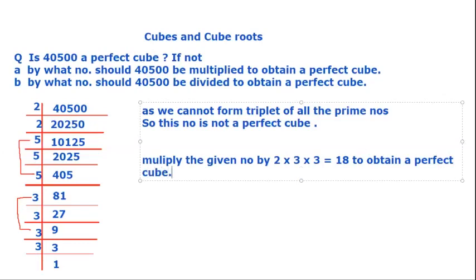Students, by what number should 40500 be multiplied to obtain a perfect cube. We have this: multiply the given number by 18 to obtain a perfect cube.